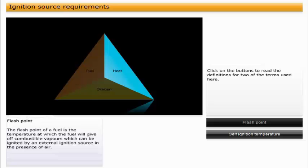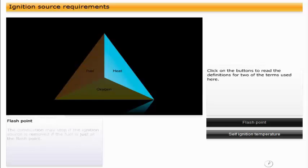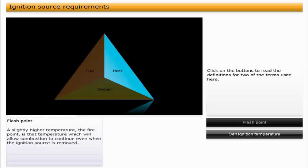The flash point of a fuel is the temperature at which the fuel will give off combustible vapors, which can be ignited by an external ignition source in the presence of air. The combustion may stop if the ignition source is removed if the fuel is just at the flash point. A slightly higher temperature, the fire point, is that temperature which will allow combustion to continue even when the ignition source is removed.